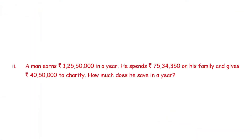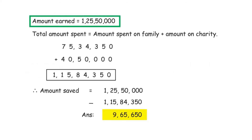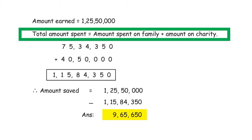A man earns 1 crore 25,50,000 rupees in a year. He spends 75,34,350 rupees on his family and gives 40,50,000 rupees to charity. How much does he save in a year? The first thing to write is what has been given. Amount earned is equal to 1 crore 25,50,000 rupees. Total amount spent is equal to amount spent on family plus amount on charity.